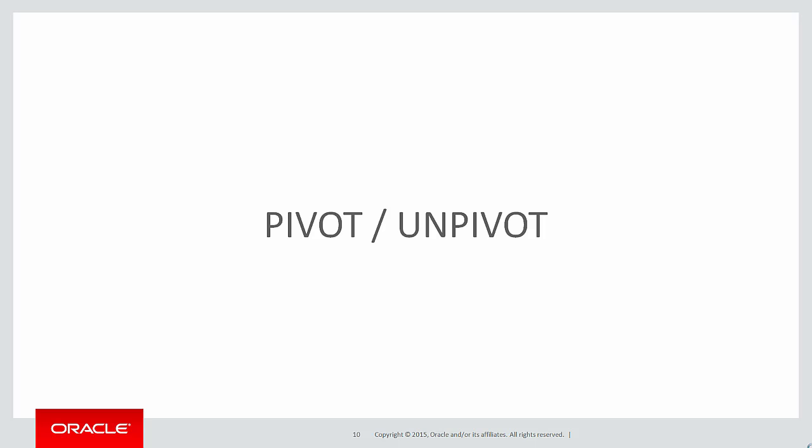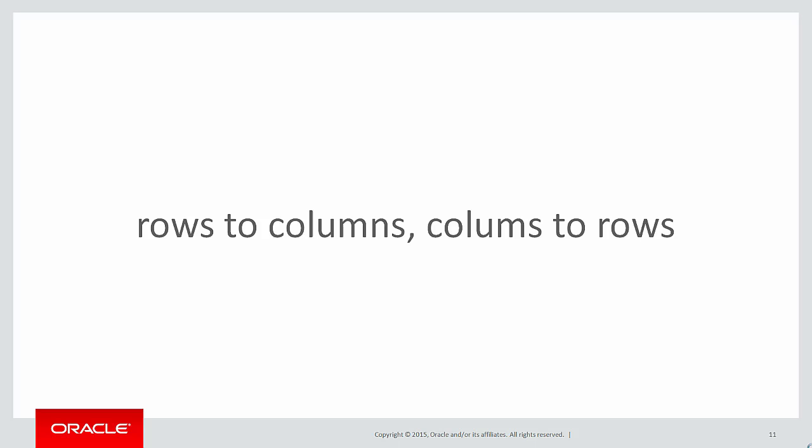Today we're going to talk about pivot and unpivot. Rows to columns and columns to rows — that's what pivoting and unpivoting is about. Taking rows making them columns, taking columns making them rows.